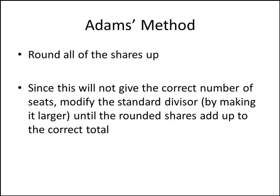Adams' method gives us a way to figure out exactly how many whole number seats each state should get. Adams' method says to round each of these shares up, but if we do that, it will always give us a number of seats that's more than what we're looking for. So we can fix that by modifying the standard divisor — making it larger — until the rounded shares add up to the correct total. Let's see how this works out.